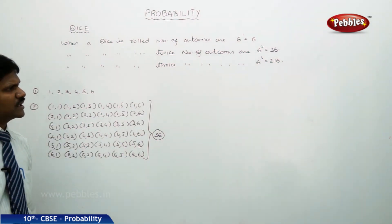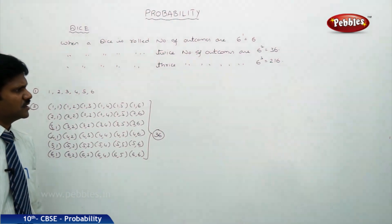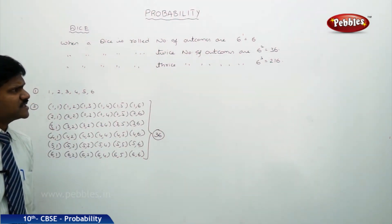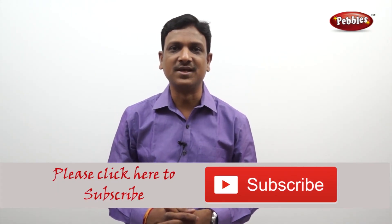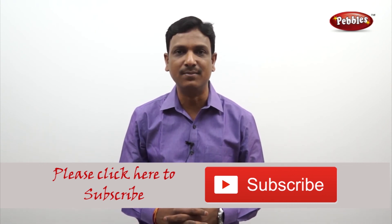Similarly, you can work out 6 power 3 equals 216 in the same way. If you like this video, please give a thumbs up. Please subscribe to our channel to get more videos on CBSE syllabus.